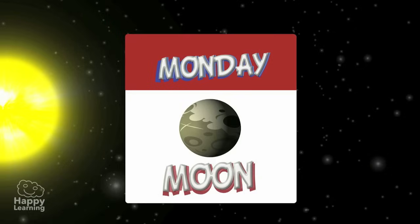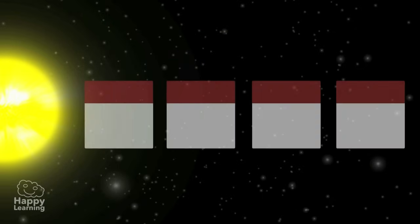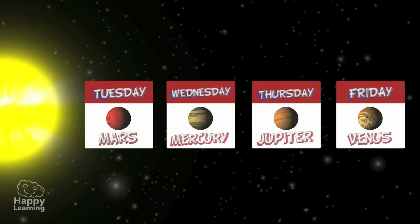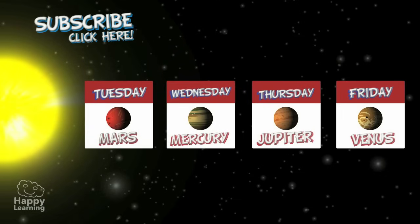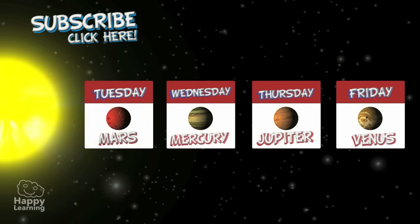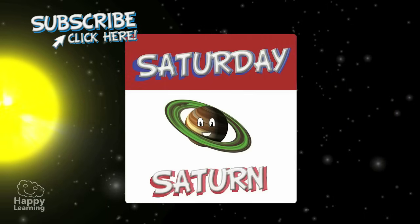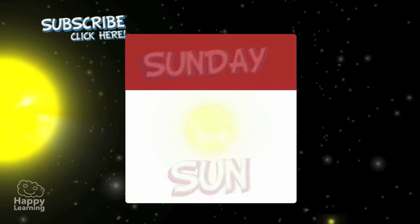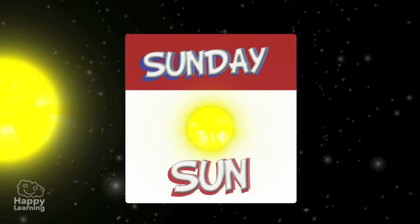gives its name to Monday. Tuesday, Wednesday, Thursday and Friday come from ancient British gods that were related to the planets Mars, Mercury, Jupiter and Venus. Saturday gets its name from Saturn and of course the Sun itself gives us the name Sunday.